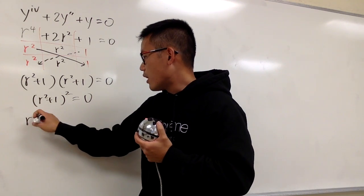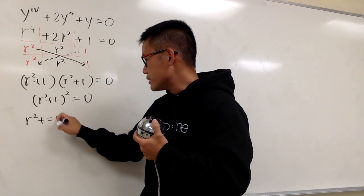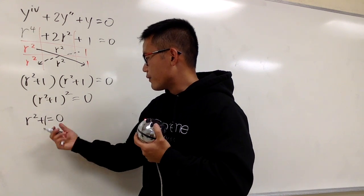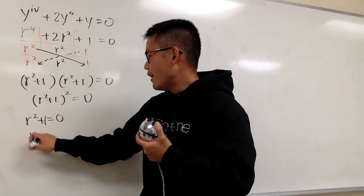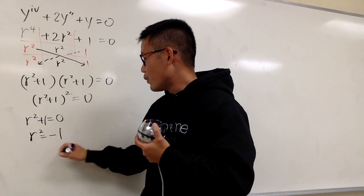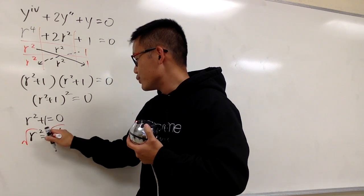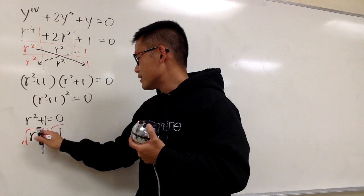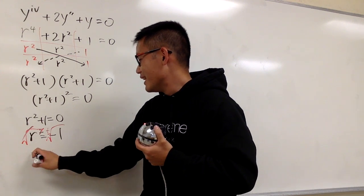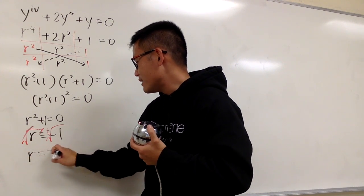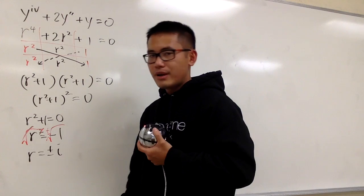Anyways, all you care about is just r squared plus 1 to be 0, and of course, from here, you can just get r squared is equal to negative 1, and then you take the square root of both sides. Usual business, right? Cancel this out, just to be cute. Anyways, r is equal to plus minus i.